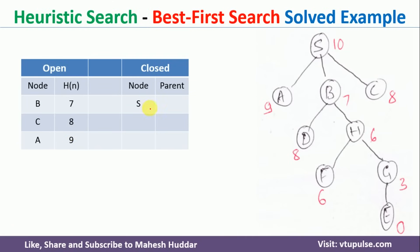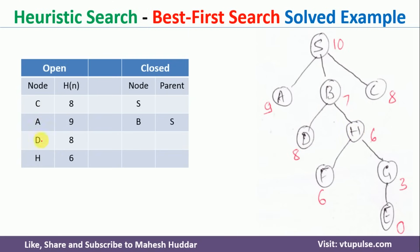We have not yet reached the goal, so again we select the best node. B is selected as the best node and placed onto the closed list. B is not a goal node, so we expand it. Expanding B gives D and H, which are added to the open list. C and A were already present, so now C, A, D, and H are on the open list while B has been moved to the closed list. We rearrange these nodes in ascending order of heuristic value, and H comes at the first position.